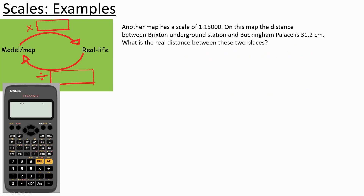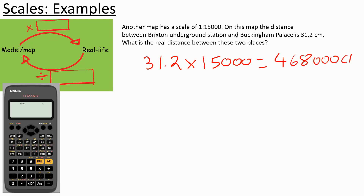Another map has a scale of 1 to 15,000. The distance between Brixton Underground Station and Buckingham Palace is 31.2 centimetres on the map. To find the real distance I multiply by 15,000, which gives 468,000 centimetres. Dividing by 100 gives 4,680 metres, and dividing by 1,000 gives 4.68 kilometres.